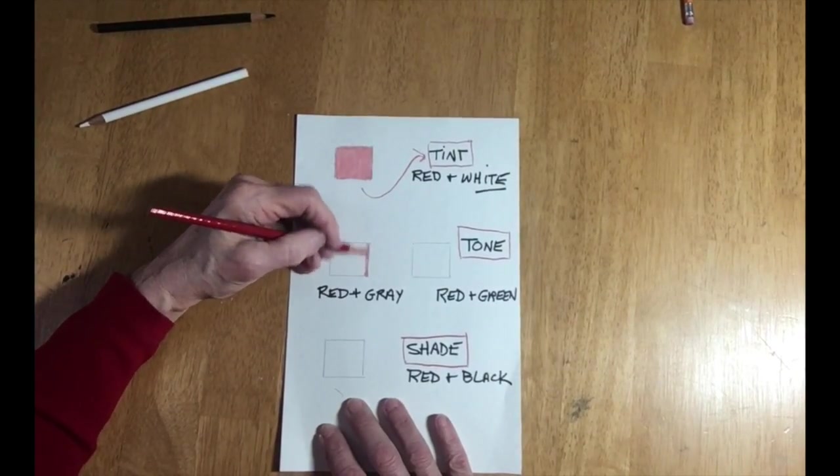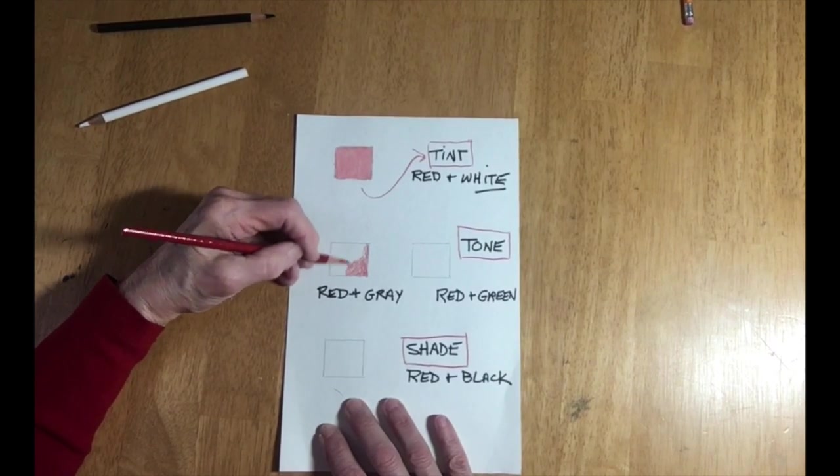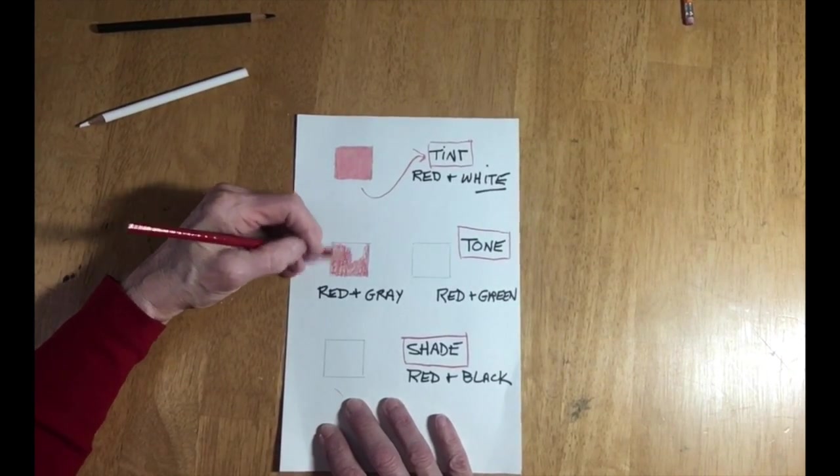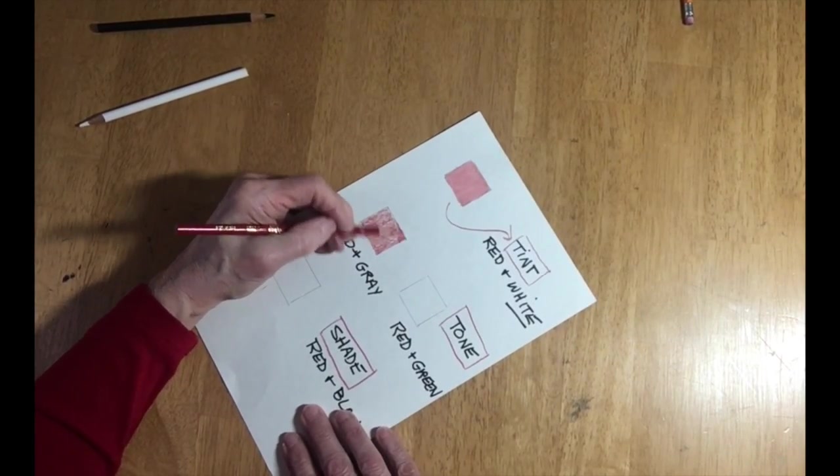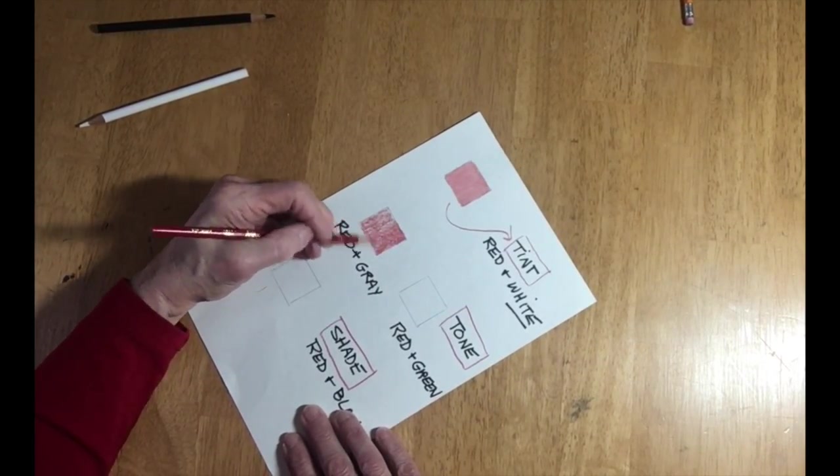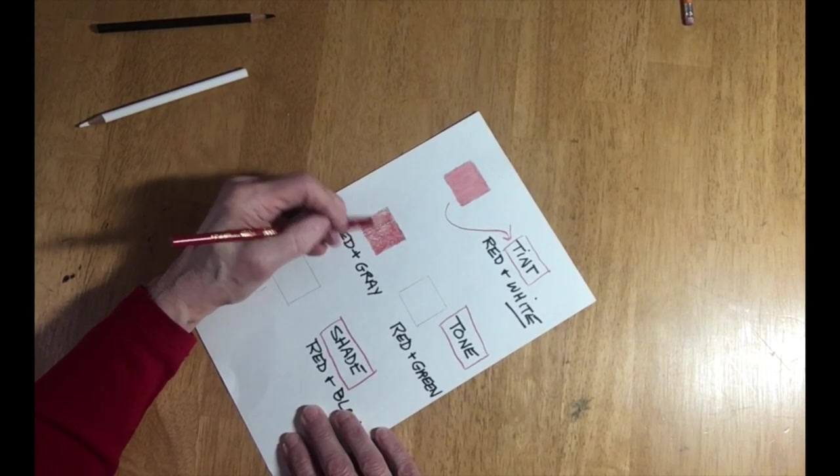The next thing we're doing is making a tone and I'm going to make a tone in two different ways. The first one is going to be a tone with gray and the second one will be a tone using red's opposite or complementary color which is green.